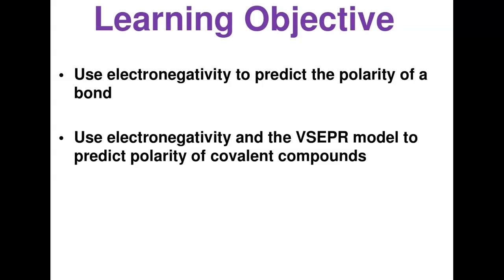Today our learning objectives are simple. First, we're going to be using electronegativity to predict the polarity of molecules. Second, we'll use electronegativity in combination with the VSEPR model — the Valence Shell Electron Pair Repulsion model — to predict the polarity of covalent bonds.